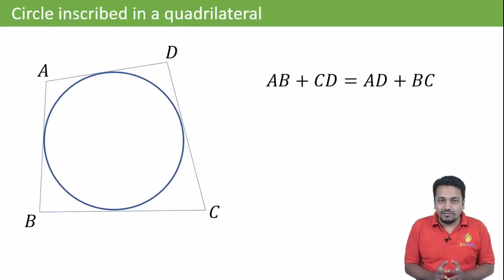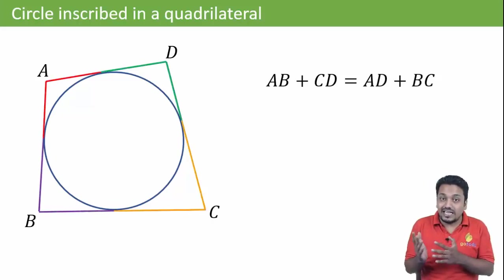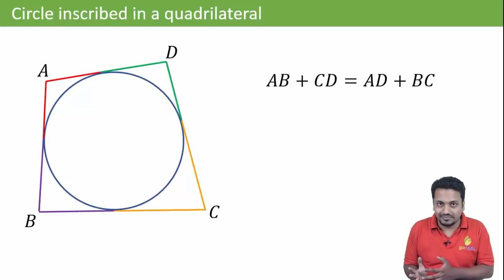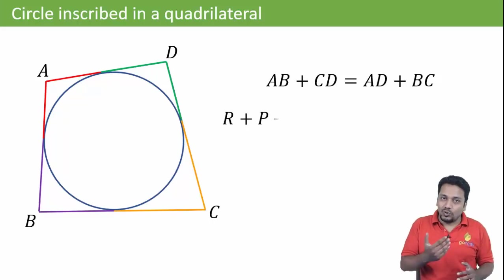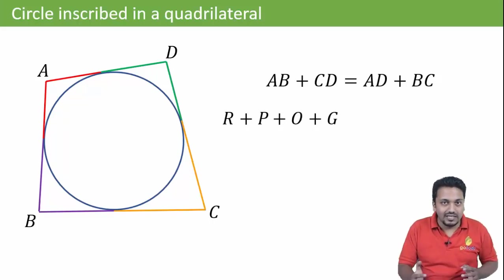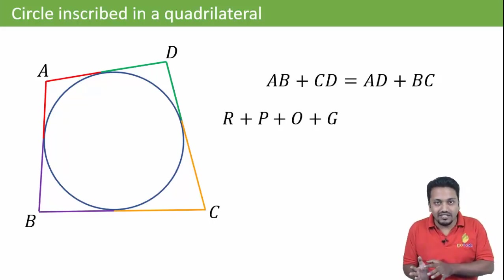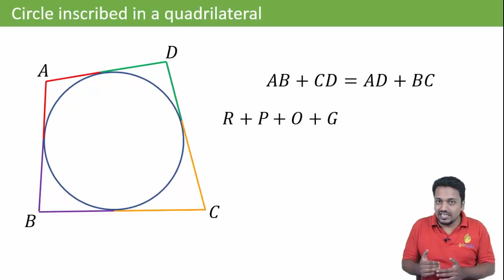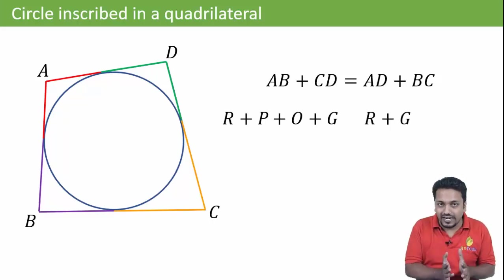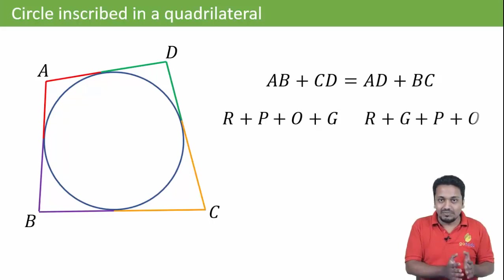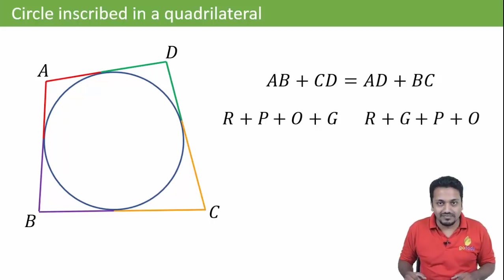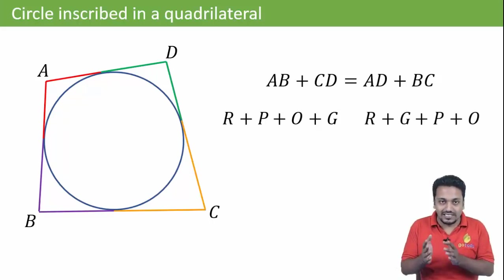In this figure I have shown equal tangents with the same color. AB is the red segment plus the purple segment. CD is orange plus green. On the right-hand side, AD is red plus green and BC is purple plus orange. So the left-hand side is equal to the right-hand side. Hence proved.